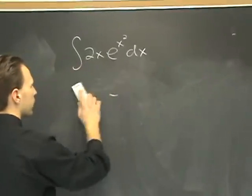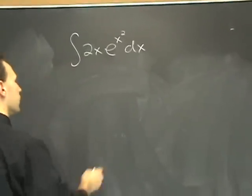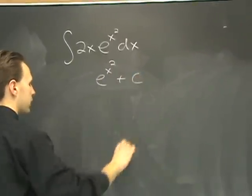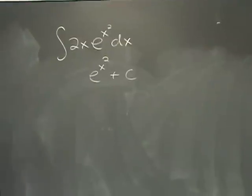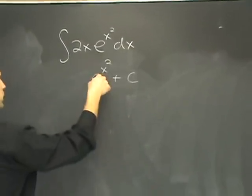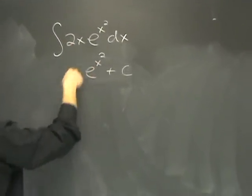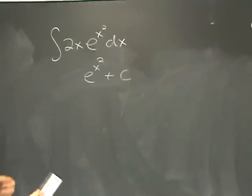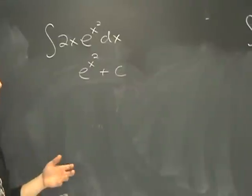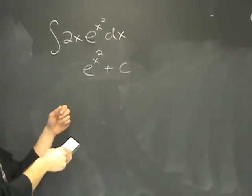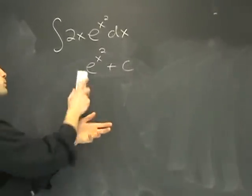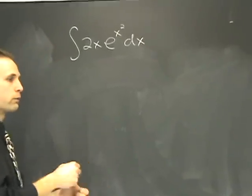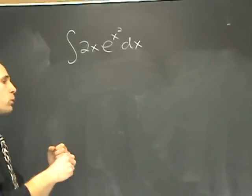Clearly that's not the answer. The actual answer happens to be e to the x squared plus c, just as is. And you can check that by differentiation — it's going to be itself times the 2x from the chain rule. What u-substitution is, it's a process of evaluating such things and getting such answers. It's a reversion of the chain rule.